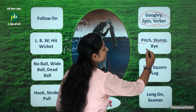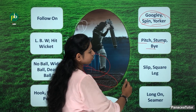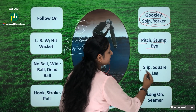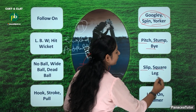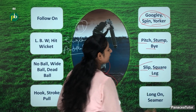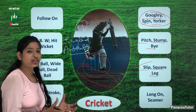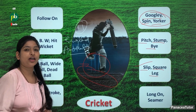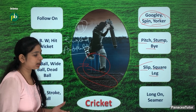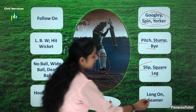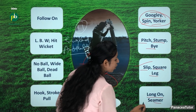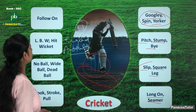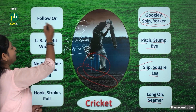After that, the next terms are slip, square leg. What are these? These are your fielding positions — where you are standing is your fielding position. Along with long on and mid-on — these are all the associated terms.